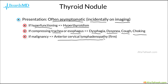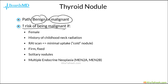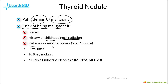This is a classic finding in the case of thyroid cancer. The real key that we are trying to figure out in the case of a thyroid nodule is whether this lesion is benign or whether it represents a malignancy. There are some key clues which can suggest that a lesion has an increased risk of being malignant. These include if the patient is female, or if the patient has a history of childhood neck radiation — oftentimes on examinations they will give a clue such as a history of lymphoma, which often requires neck radiation as part of therapy. Additionally, if the patient has a radionuclide scan and has minimal uptake,